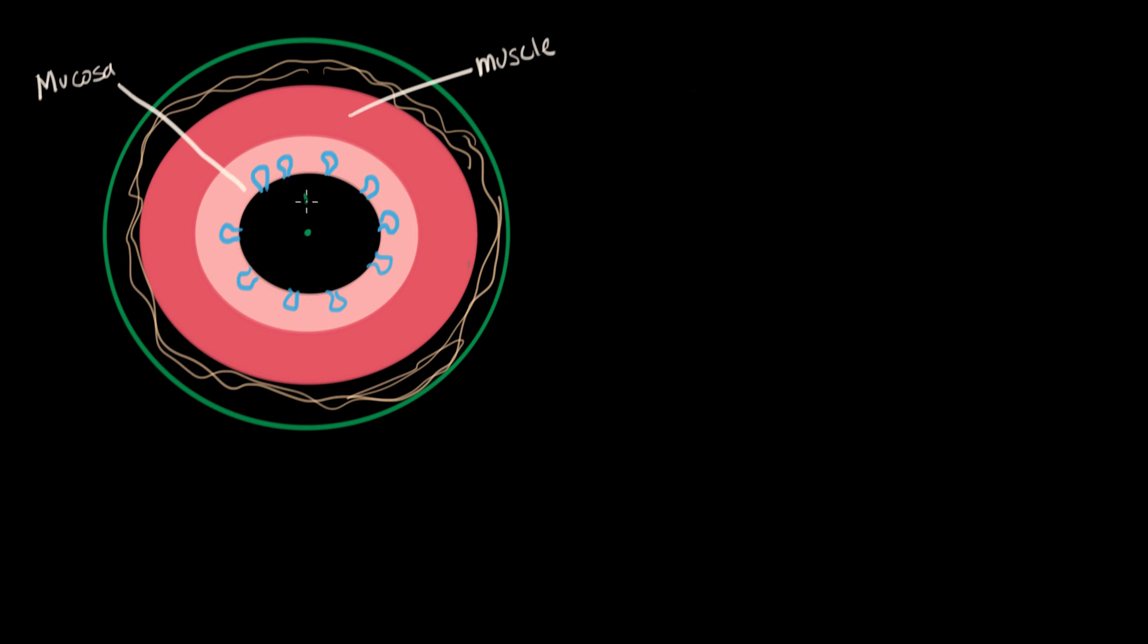And of course here we have the lumen. This is where the air actually moves in and out. It is nice and lubricated by the mucus. So this is a quick look at what the normal cross section of the airway looks like.